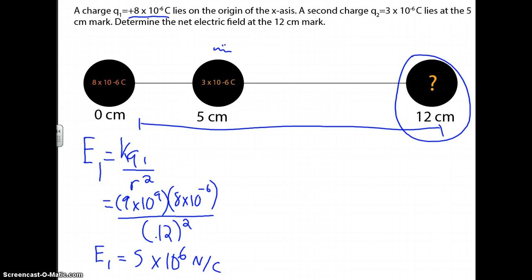But still, you need to find the second charge. You're going to use the same equation. K is still a constant. Now, you use the second charge, so it's 3 times 10 to the negative 6 over the radius squared.